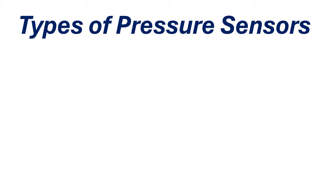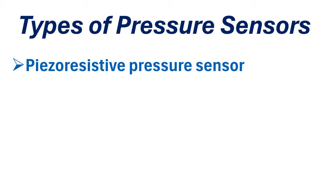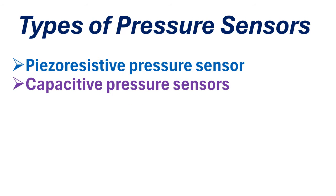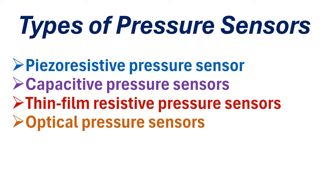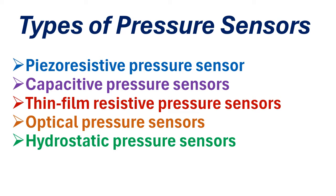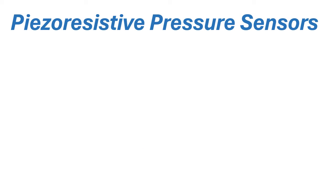Five different measurement technologies are used in pressure transmitters: piezo resistive pressure sensor, capacitive pressure sensor, thin film resistive pressure sensor, optical pressure sensor, and hydrostatic pressure sensors. In today's video we will have a closer look at each of these technologies, so let's get started. First is the piezo resistive pressure sensor.